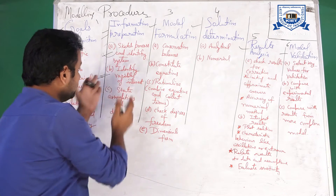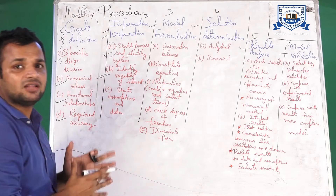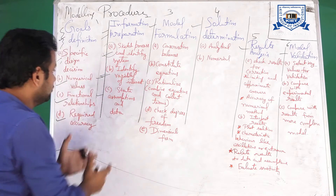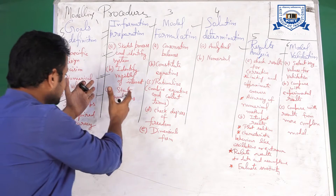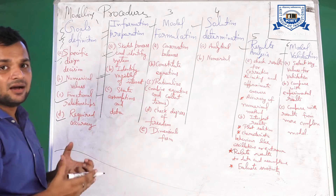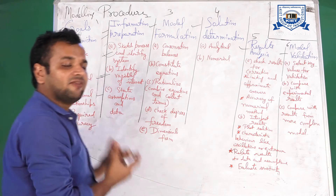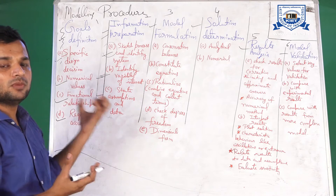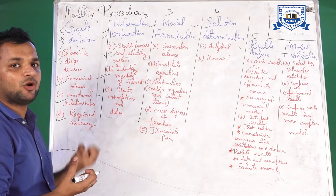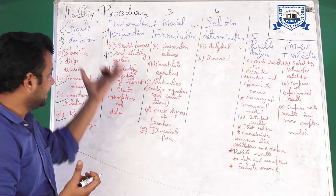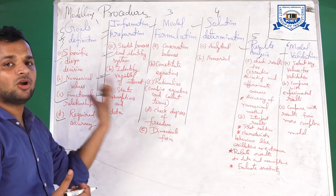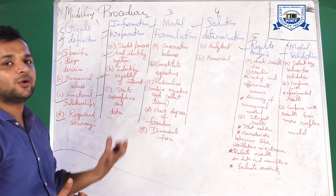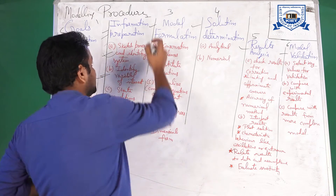Second, you identify the variables of interest — what variables you want to control in the system. Third, you identify assumptions and data. If you have data from the literature, you can use it as a reference point to identify your system or the variable of interest that you need to control in your process.